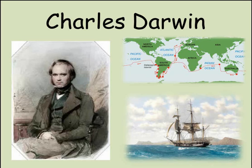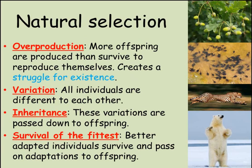Charles Darwin noticed the following things about every species he came across during his long voyage around the world between 1831 and 1836. Firstly, he saw that all species over-produced — far more offspring are born than survive to reproduce themselves. Take the number of acorns produced by an oak tree during its life, or the number of tadpoles produced by a single pair of frogs each spring. The vast majority of these individuals will die before they are able to reproduce. This, Darwin said, is what creates competition and a struggle for existence.